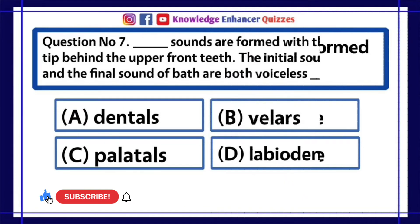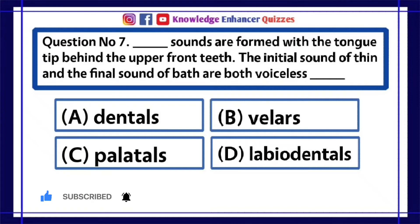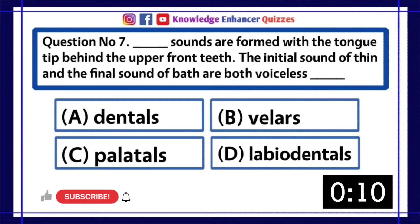Question number 7. Dash sounds are formed with the tongue tip behind the upper front teeth. The initial sound of thin, and the final sound of bath, are both voiceless dash. A. Dentals. B. Velars. C. Palatals. D. Labiodentals.